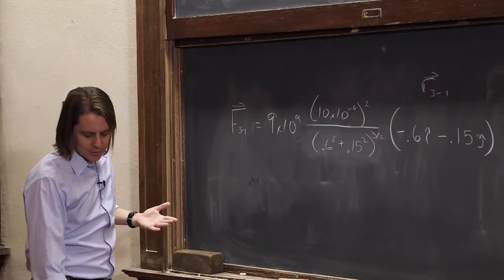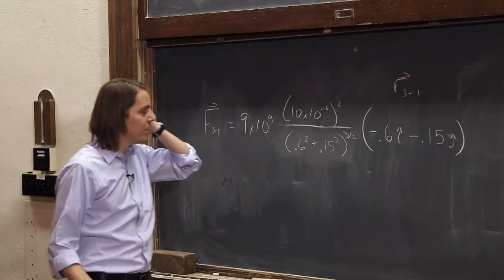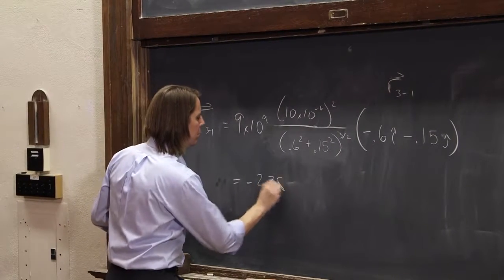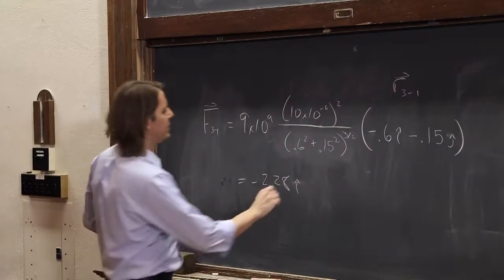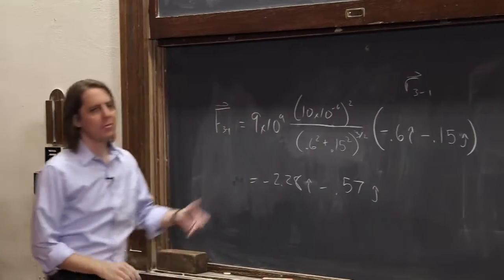If you break that down into components, solve everything, do this 0.6 squared plus 0.15 squared to the 3 halves, you'll get minus 2.28 i hat and minus 0.57 j hat. It gives the same thing we got last time.